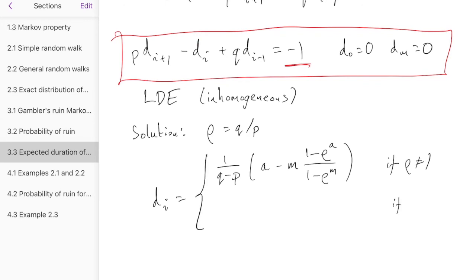Or if rho is equal to 1, we have the much nicer expression, a times m minus a. And so in section 4 of the notes, we'll see how to show that that is the solution of the LDE, the linear difference equation.